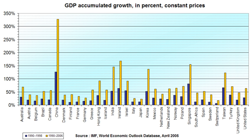According to Harrod, the natural growth rate is the maximum rate of growth allowed by the increase of variables like population growth, technological improvement and growth in natural resources. In fact, the natural growth rate is the highest attainable growth rate which would bring about the fullest possible employment of the resources existing in the economy.